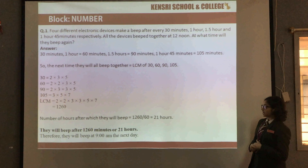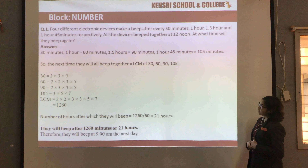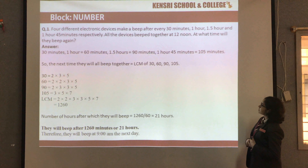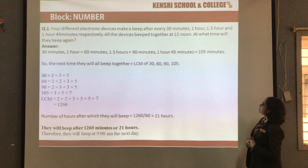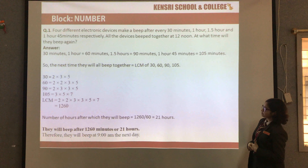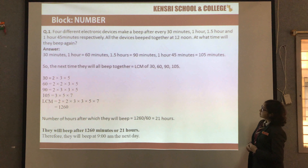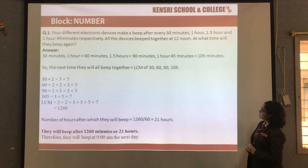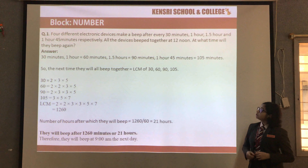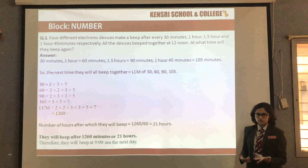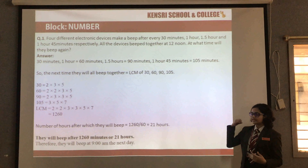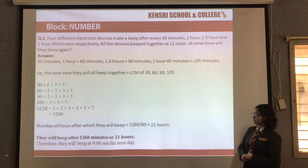The question we have here is: four different electronic devices make a beep after every 30 minutes, one hour, one and a half hours, and one hour 45 minutes respectively. All the devices beep together at 12 noon. At what time will they beep again? Since the timings are given in different units, we have to first convert them into a common unit. Let's take minutes as the unit.